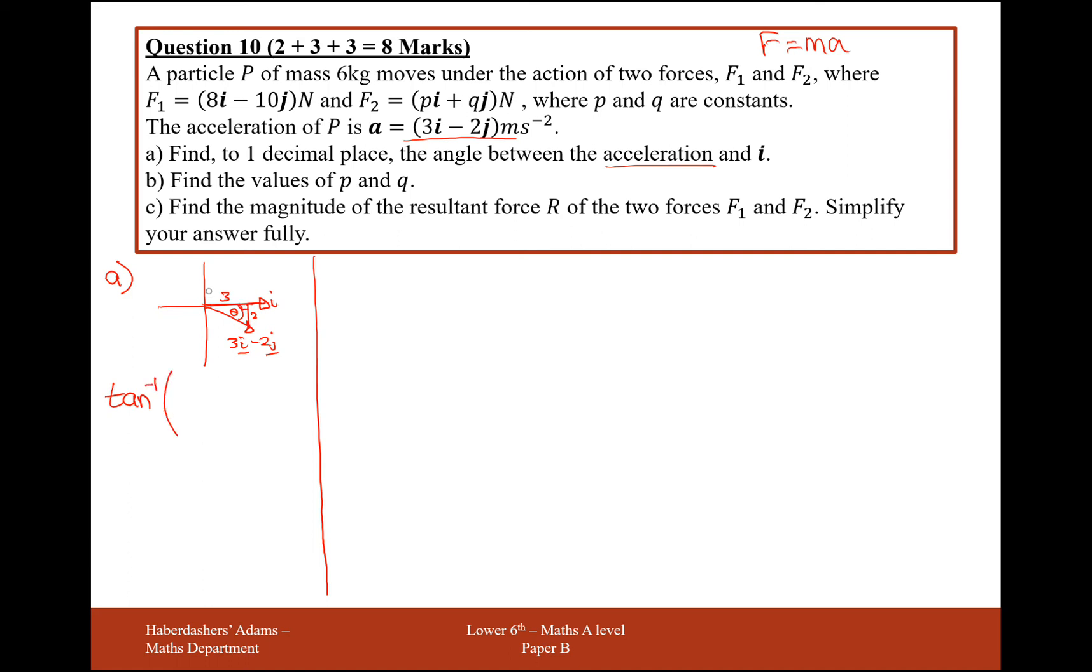So tan to the minus 1 and it's opposite over adjacent. So 2 over 3. Don't bother about the minus, because that's not needed for this part of the question.